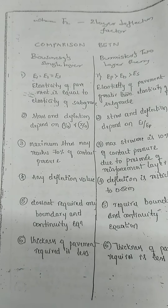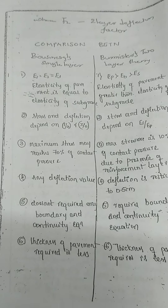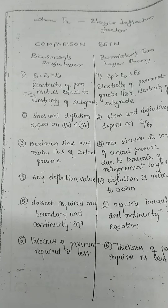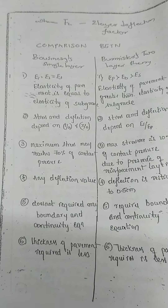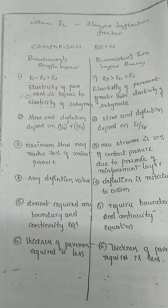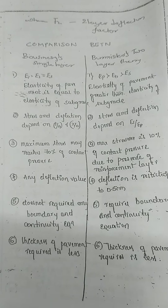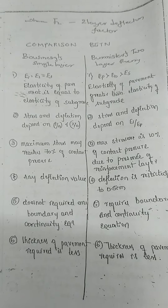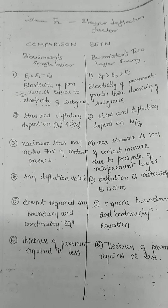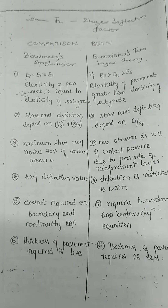Third difference: In Bosnick's theory, maximum stresses may reach 70% of contact pressure, whereas in Burmester's theory, maximum stresses are only 10% of contact pressure due to the presence of reinforcement layers.